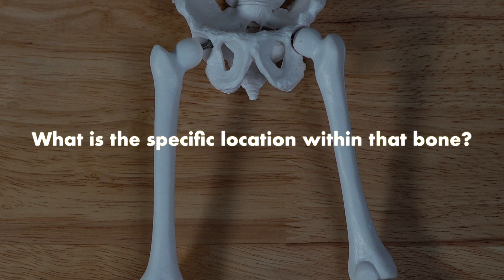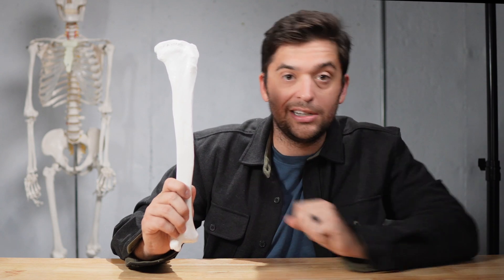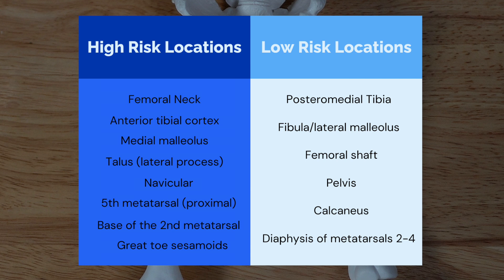The second question is: what is the specific location within that bone? Your tibia is the most common location for a bone stress injury, but you can have different locations within that tibia that are managed in different ways. This is because we categorize bone stress injuries into low and high risk based on their potential to heal and the likelihood of complications. Low-risk locations tend to heal really well — they have good blood flow and favorable biomechanics. High-risk locations tend to have a harder time healing and are more likely to progress to a full fracture, potentially need surgical intervention, or have a higher risk of not healing or developing avascular necrosis. You need to know the bone that's involved, but you also need to know the specific location within that bone, because it could change how you're going to manage it.